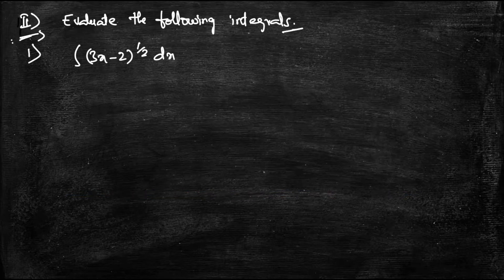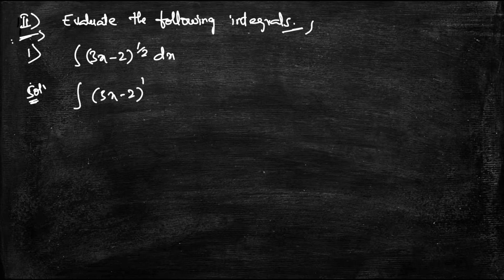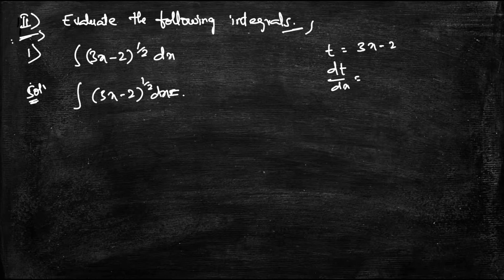Starting with the first question: evaluate the following integrals. The given question is integral of (3x minus 2) to the power of 1/2 dx. We have to find the solution. I will take 3x minus 2 equal to t.